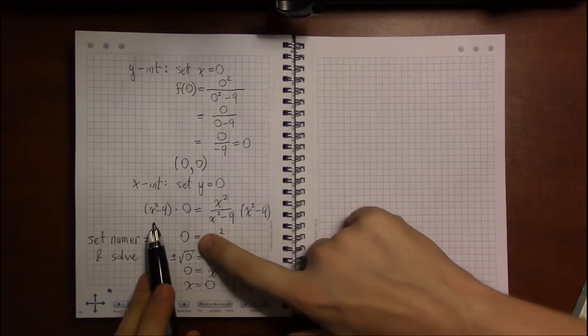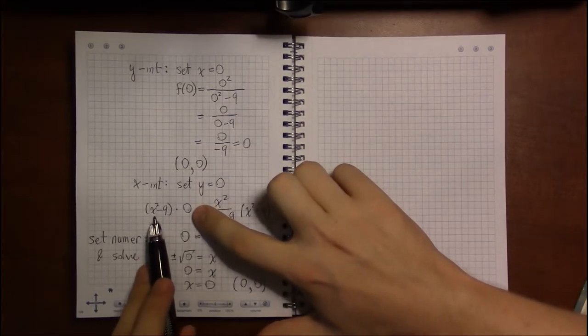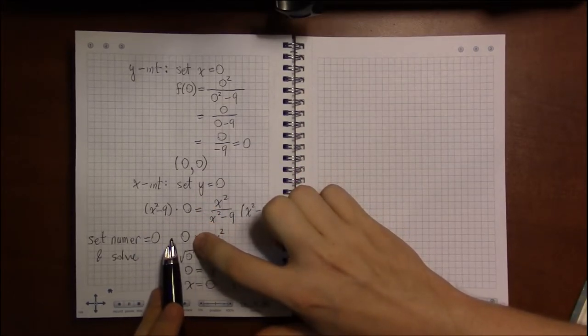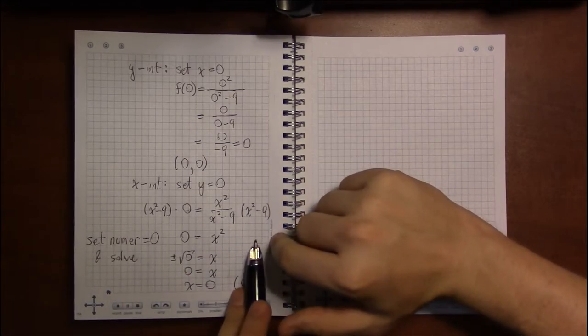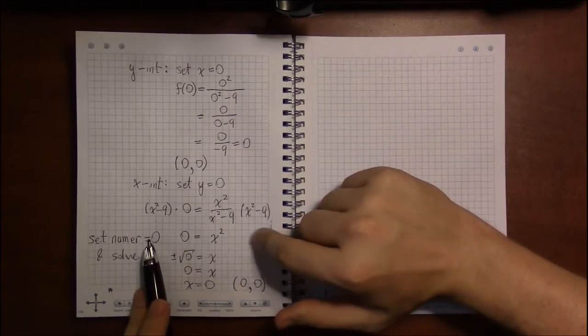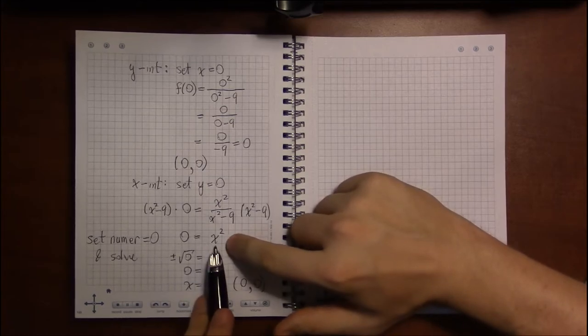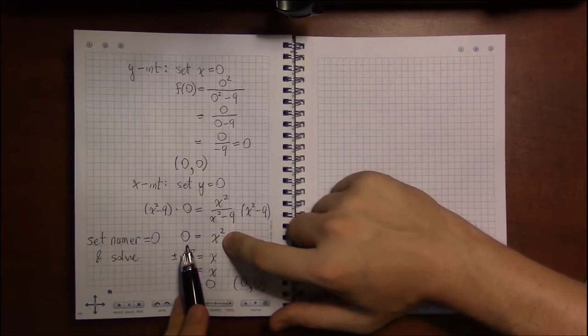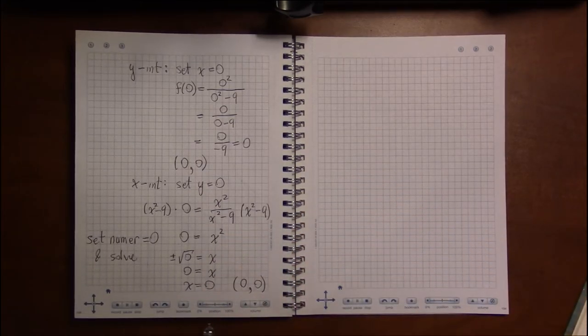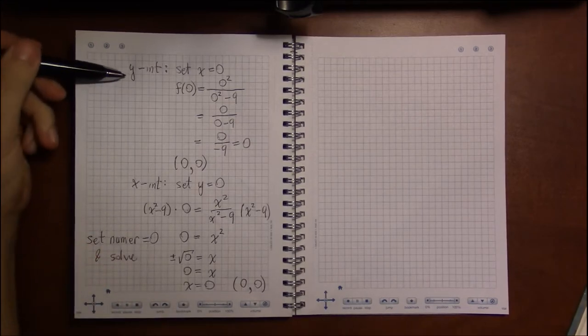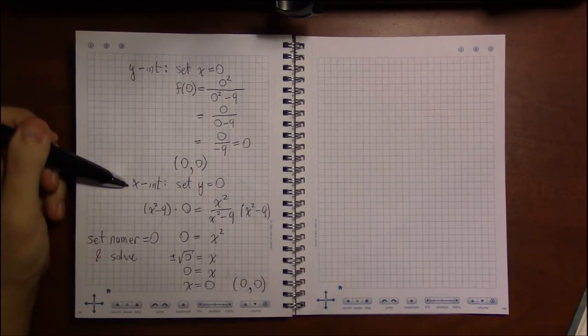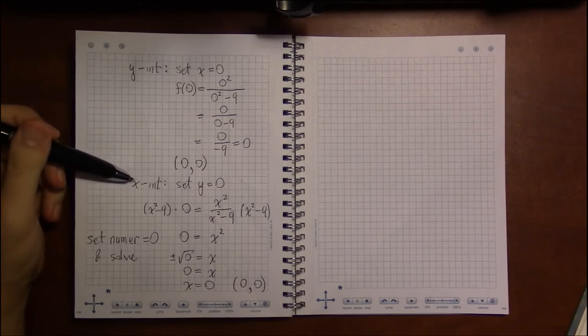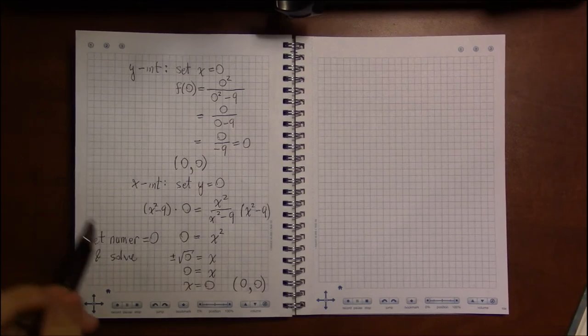On the left, whatever the denominator was times 0 is just 0. So the first step is to just get the denominator out of the equation, to rewrite the equation as the numerator equals 0. That's a shortcut with rational functions for determining their x-intercepts.